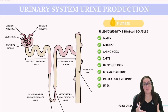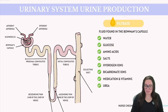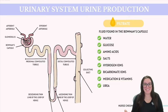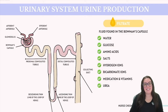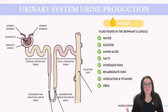Once the fluid enters the Bowman's capsule, it is referred to as filtrate. Filtrate is a fluid that contains several key components: water, glucose, amino acids, and various kinds of salts. Additionally, you'll find hydrogen ions, bicarbonate ions, and other miscellaneous ions. If present, medications and some vitamins may also be found in the filtrate. It also contains urea, which is a nitrogenous waste product generated by the liver that the body needs to eliminate.